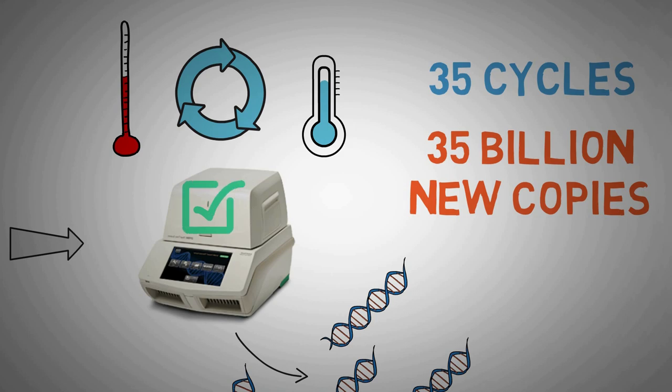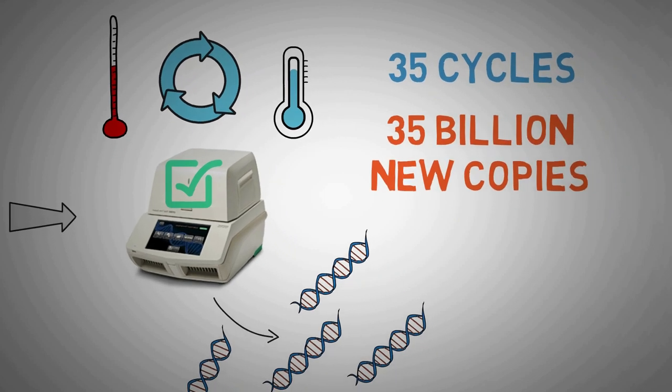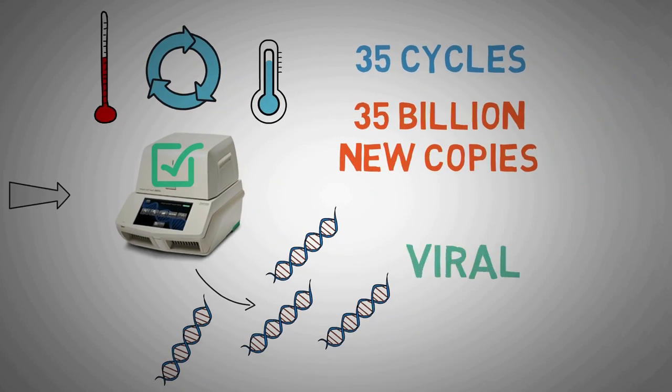As new copies of the viral DNA sections are made, the marker labels release a fluorescent dye, a signal which is measured by the machine's computer and presented in real-time on the screen. The computer tracks the intensity of the fluorescence in the sample after each cycle. When the amount goes over a certain level of fluorescence, the presence of the virus is confirmed.